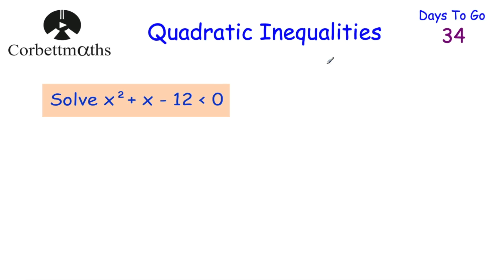Today we're going to be looking at solving quadratic inequalities. We've looked previously at solving quadratic equations, now we're going to look at how to solve quadratic inequalities. Here's an example: solve x squared plus x subtract 12 is less than 0. If you think you know how to do these, feel free to press pause now to try this question. The first thing I'm going to do is a little sketch of y equals x squared plus x minus 12.